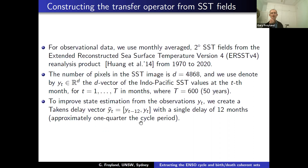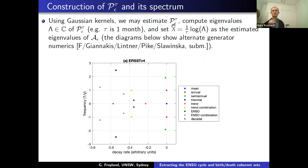We estimate the transfer operator using essentially a fairly standard collocation with Gaussian kernels — little Gaussian balls placed around each data point, effectively collocated and then normalized. The spectrum after performing this log transformation looks like what you see here.